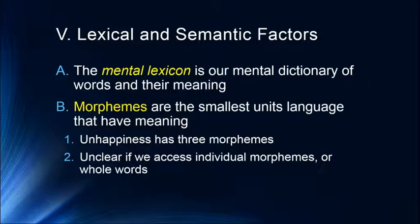That gets us to lexical and semantic factors. The mental lexicon is our mental dictionary of words and their meanings — all of the words we know, and we keep gaining more. Morphemes are the smallest units of language that have meaning. For example, 'unhappiness' has three morphemes: 'un,' 'happy,' and 'ness.' 'Happy' is an emotion, 'un' conveys a state of not, and 'ness' conveys an overall state. It's unclear whether we access individual morphemes and combine them to figure out the meaning, or process the entire word — it probably depends on our experience with the word.